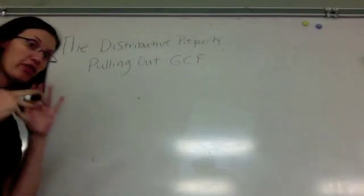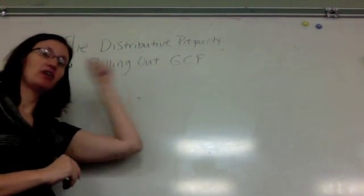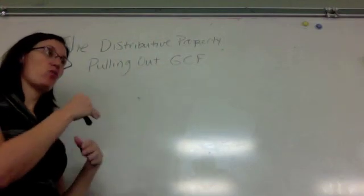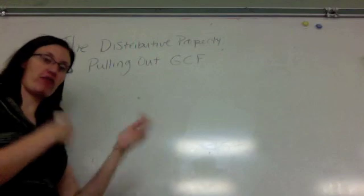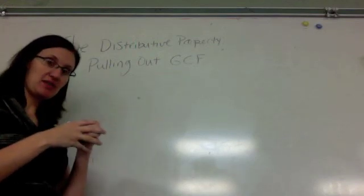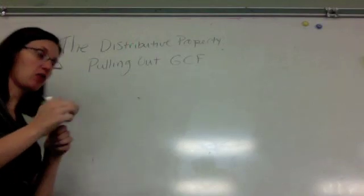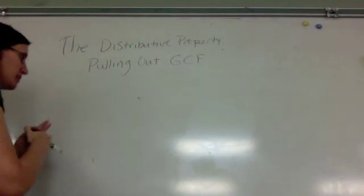So the third part of the distributive property is pulling out the greatest common factor. This is actually going to be the rainbow property in reverse. We are going to start with a problem that has no parentheses, and we are going to create it with parentheses. Let's start with an example.